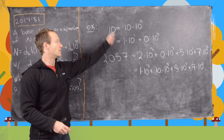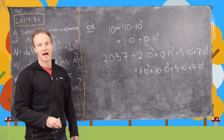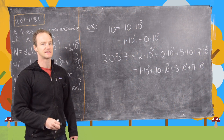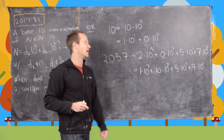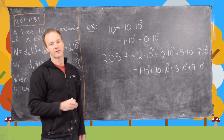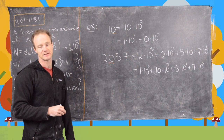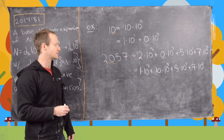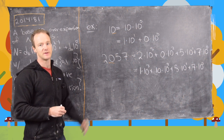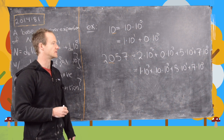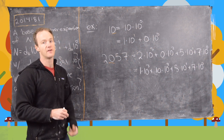Looking at these two examples, it looks like the thing allowing us to have more than one base 10 over-expansion is a 0 appearing in the standard way of writing the number — and that's exactly the case. It turns out if you do not have a 0, it's impossible to have anything but a unique base 10 over-expansion, which would just be the standard base 10 expansion.